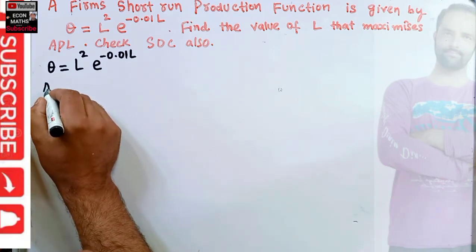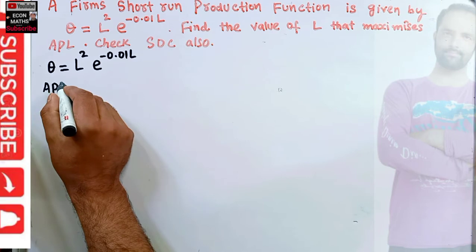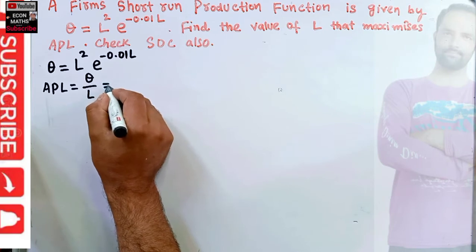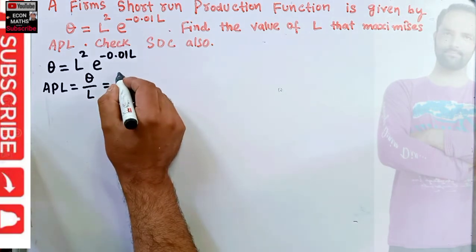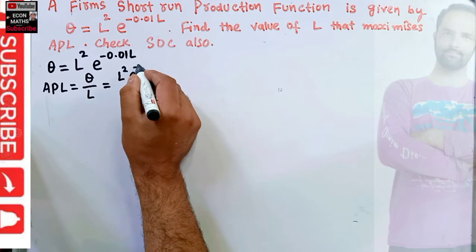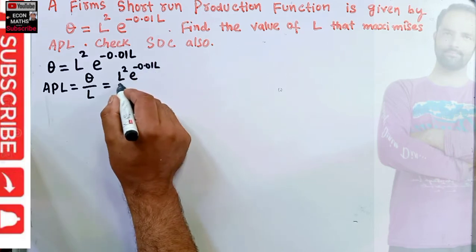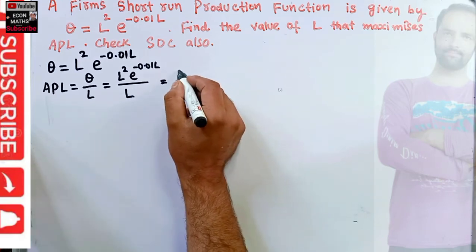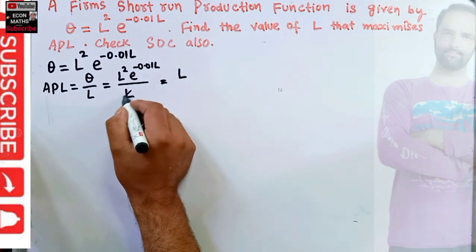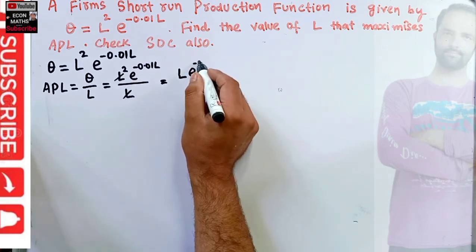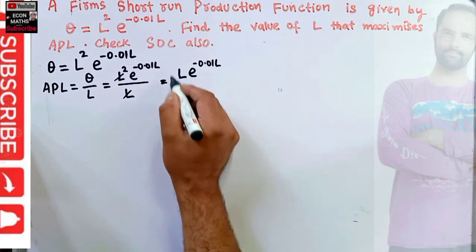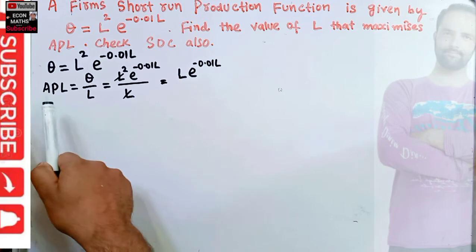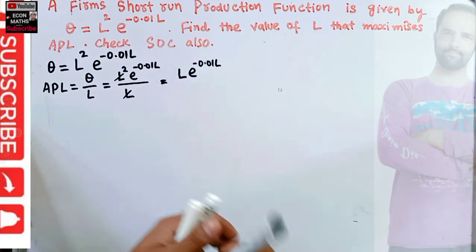We have to find the value of labor that maximizes the average product of labor and check the second order condition for maximum. The average product of labor is total output divided by labor, so APL equals L squared times e to the power minus 0.01L divided by L, which simplifies to L times e to the power minus 0.01L.